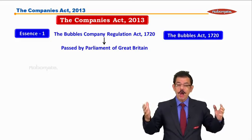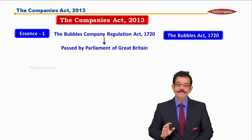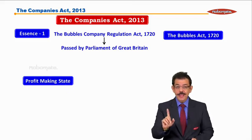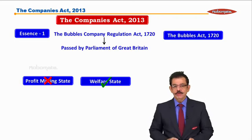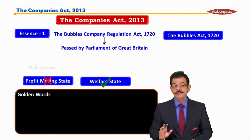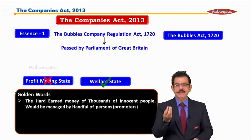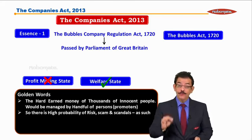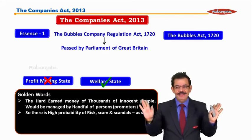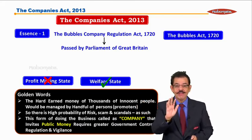Jab aisi bubbles companies aayin, logon ka hard earned money lekar bhaag gain, tab jaake European government ki aankhein kholin. Ke humara main motive profit nahi hai, humara main motive welfare state hai — profit making state nahi hai, we are a welfare state. Aur students, yahaan par golden words humein yaad rakhne hain: the hard earned money of thousands of innocent people will be managed by a handful of persons — that is called as promoters. So there is a high probability of scams, scandals, and risk. Thus, this form of doing business called as company — that invites public money — requires greater government control and regulation.